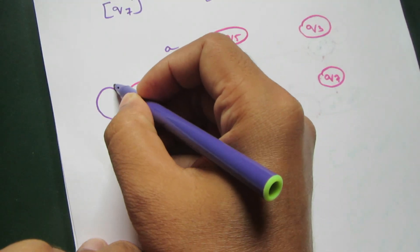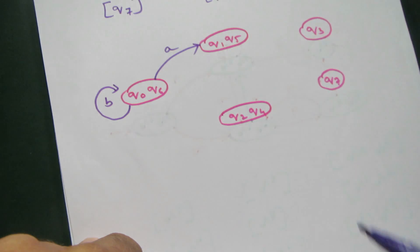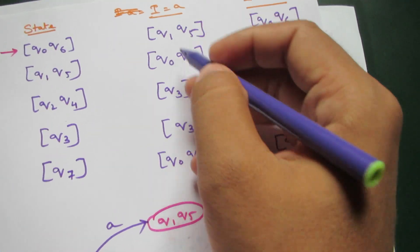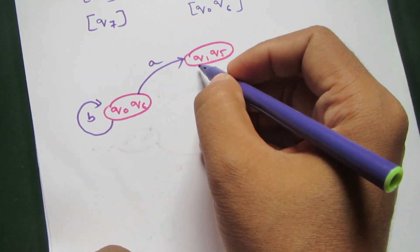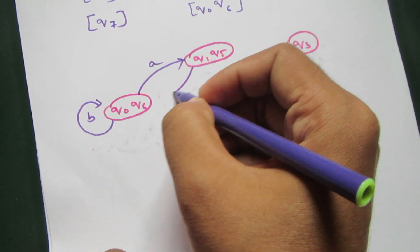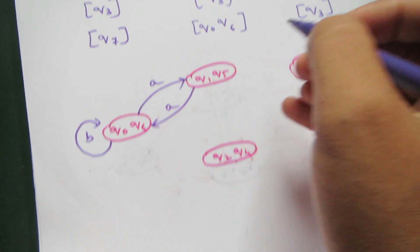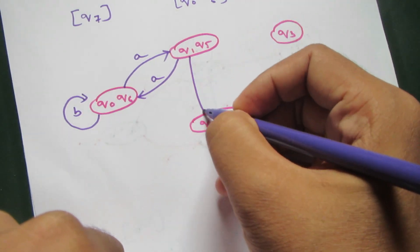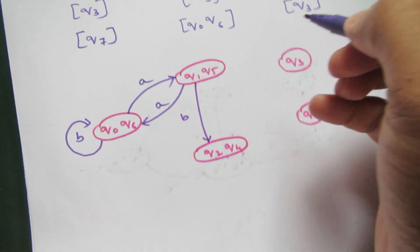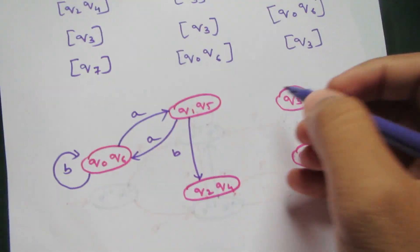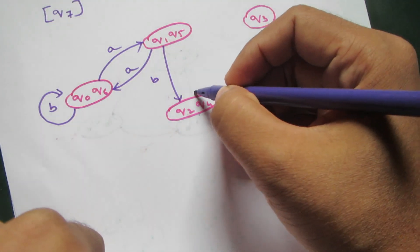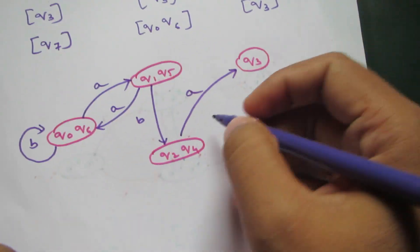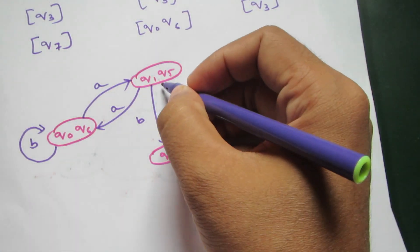q1 q5 goes to q0 q6 on input a, and to q1 q5 on input b. q2 q4 goes to q1 q5 on input a, and q2 q4 also goes to q1 q5 on input b.